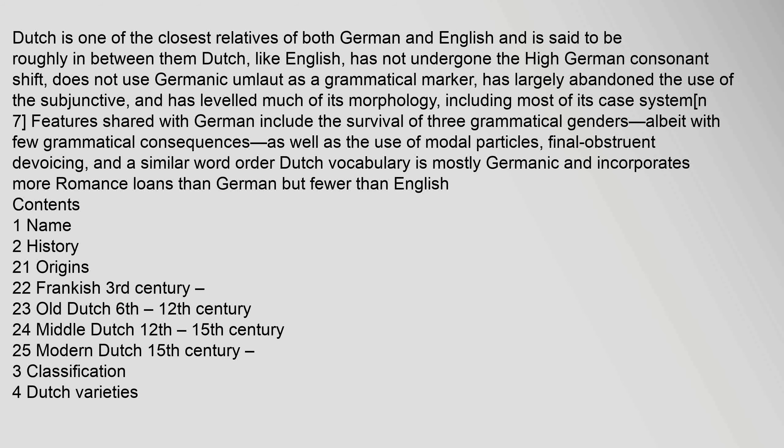Dutch is one of the closest relatives of both German and English and is said to be roughly in between them. Dutch, like English, has not undergone the High German consonant shift, does not use Germanic umlaut as a grammatical marker, has largely abandoned the use of the subjunctive, and has leveled much of its morphology, including most of its case system. Features shared with German include the survival of three grammatical genders, albeit with few grammatical consequences, as well as the use of modal particles, final obstruent devoicing, and a similar word order. Dutch vocabulary is mostly Germanic and incorporates more Romance loans than German but fewer than English.